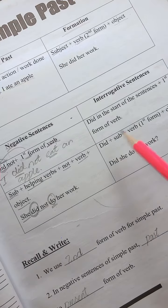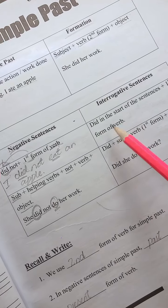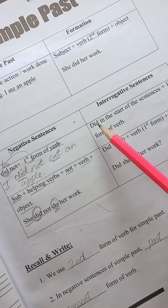Now, when we make sentences, what do we do? Did is in the start of the sentences. That the did is a helping verb. We take it in the start form. We check the formation. Did, subject, plus verb, first form of verb, and object.